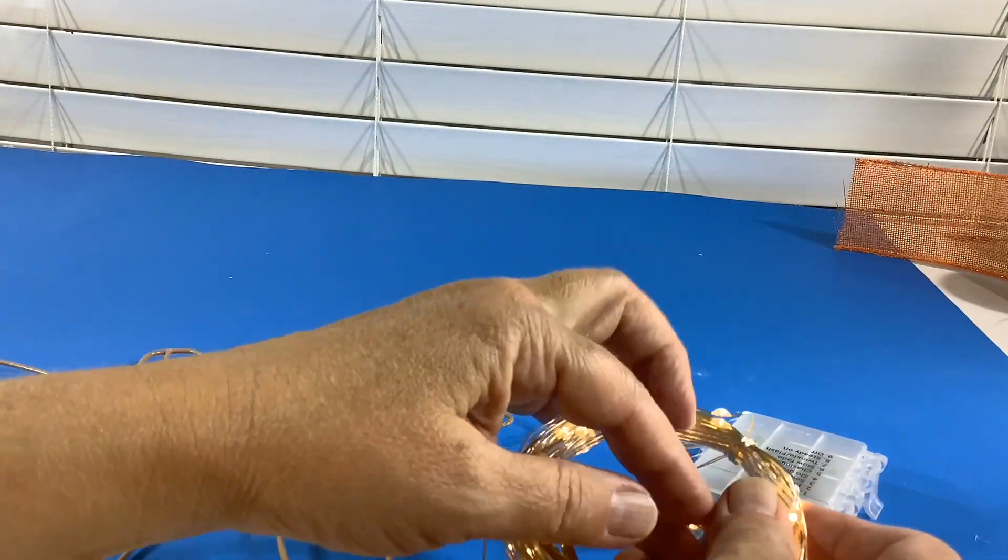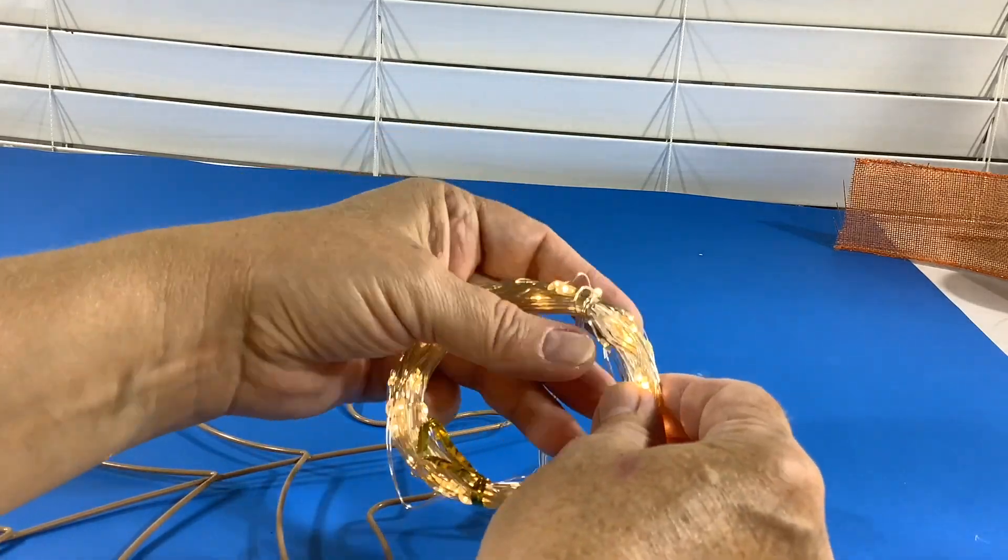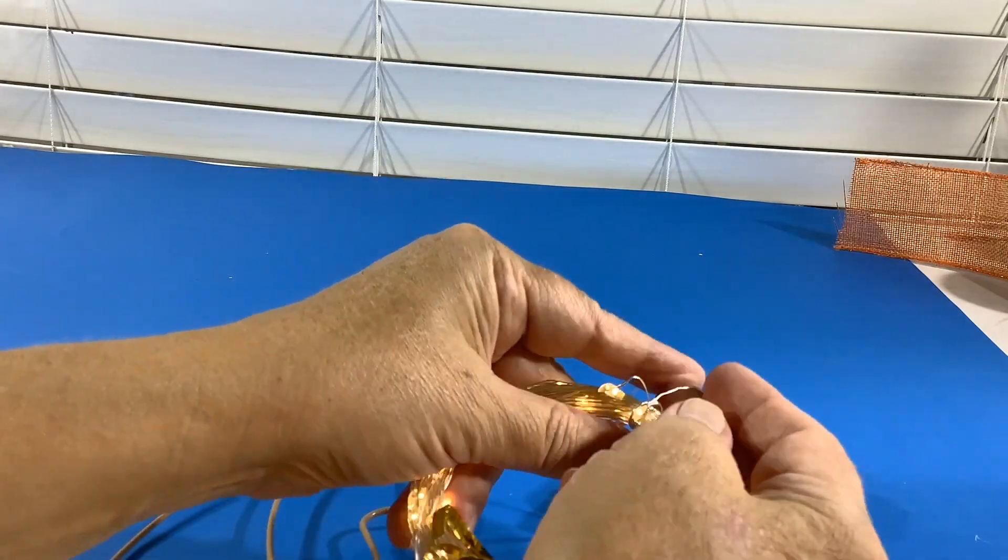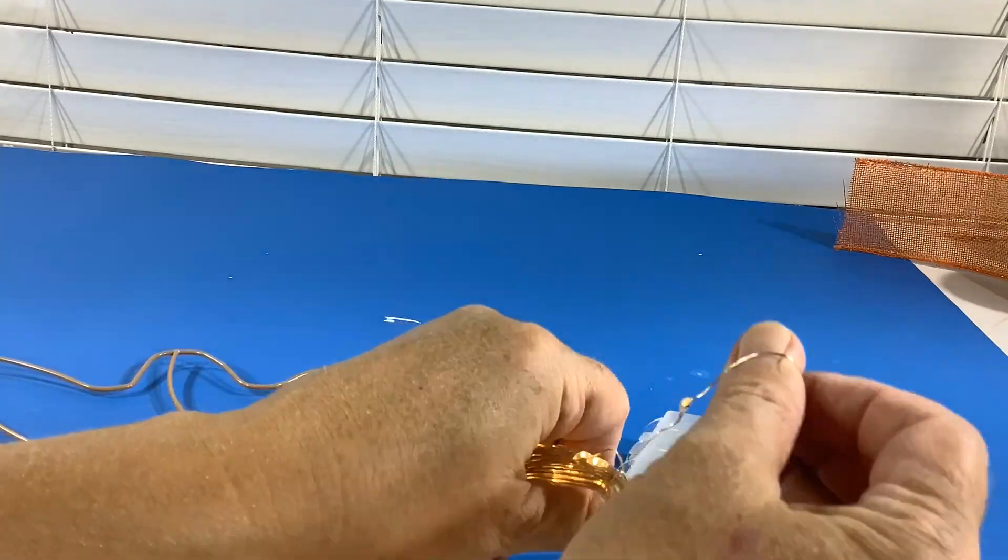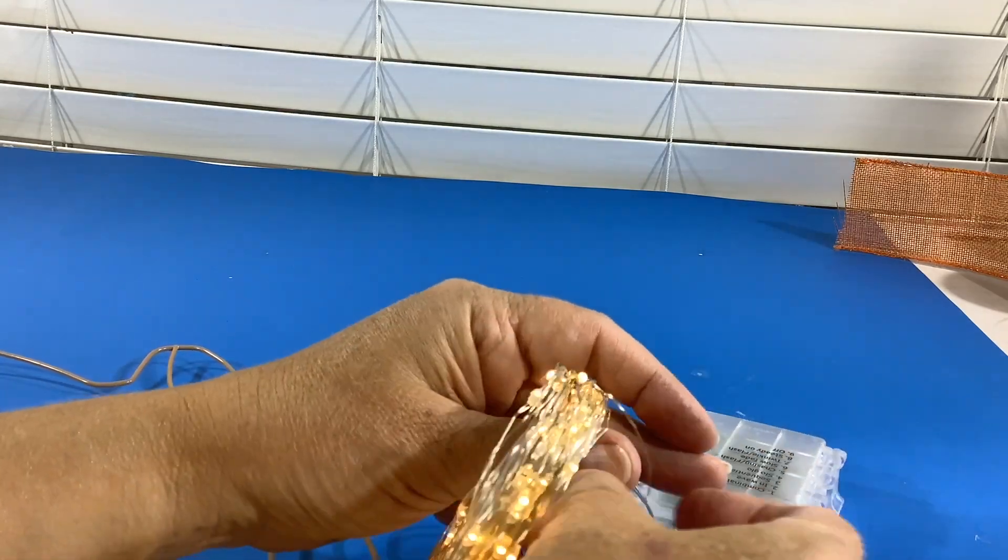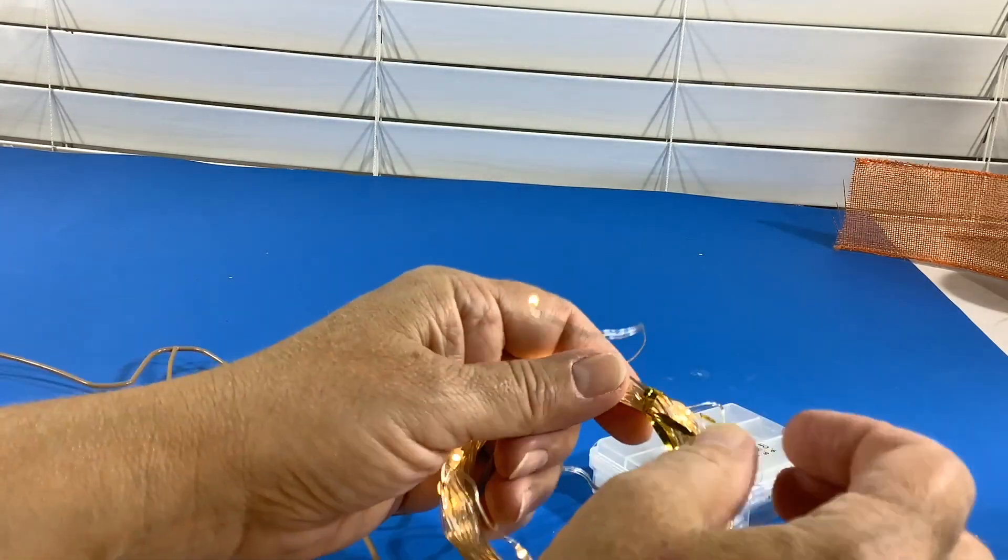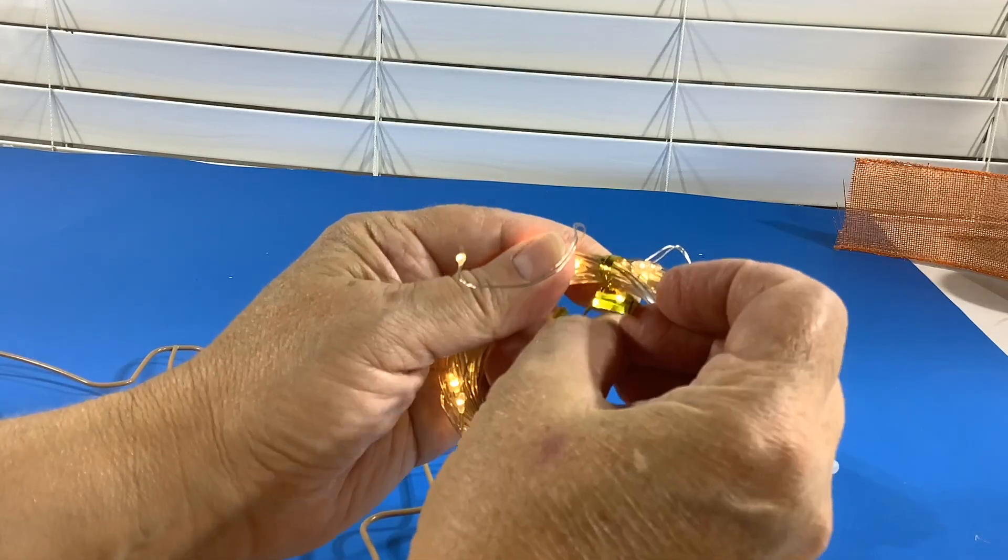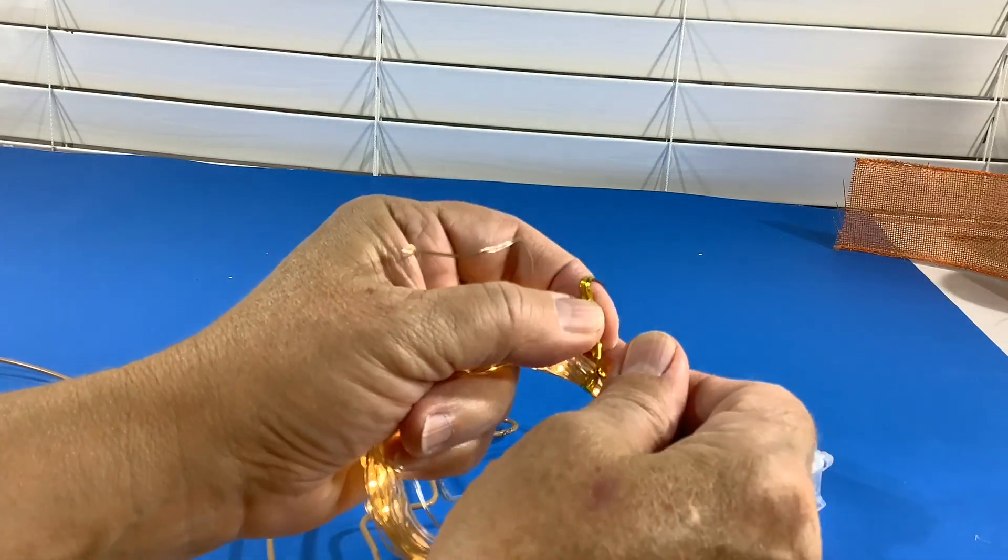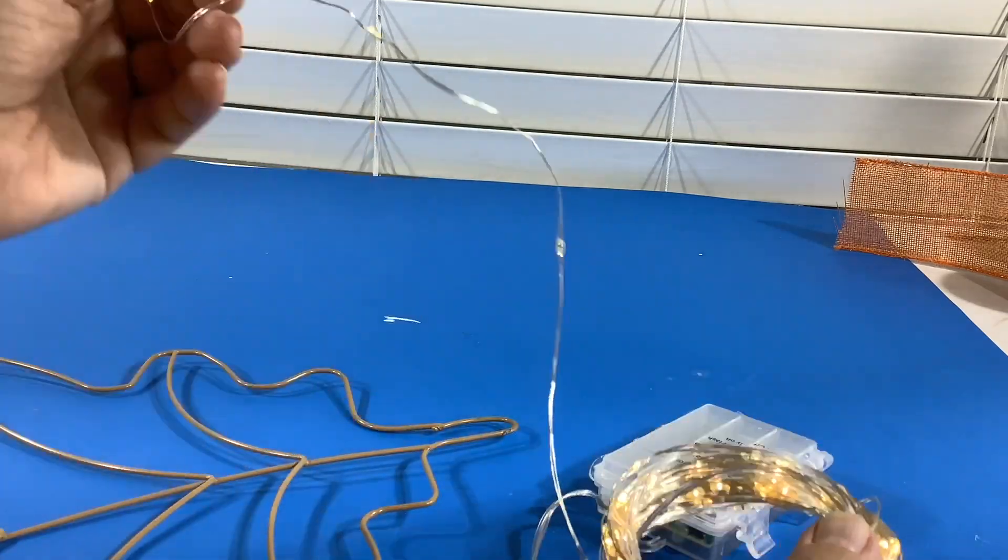I got that from Dollar Tree and I ordered off of Amazon these fairy lights that come with a battery pack and also a remote control, so that's going to work perfect for this project. I also got rechargeable batteries. I'm not a fan of using batteries but if I have to, I use rechargeable so that we can continue to reuse them over and over again.